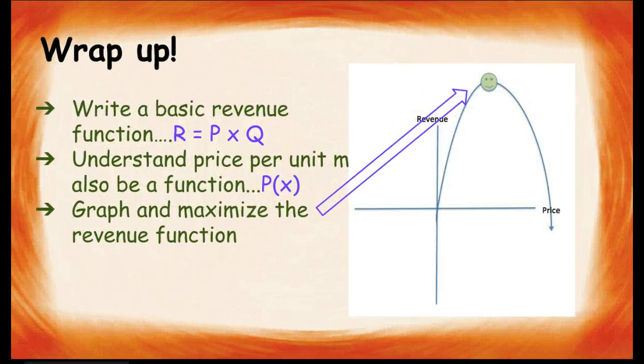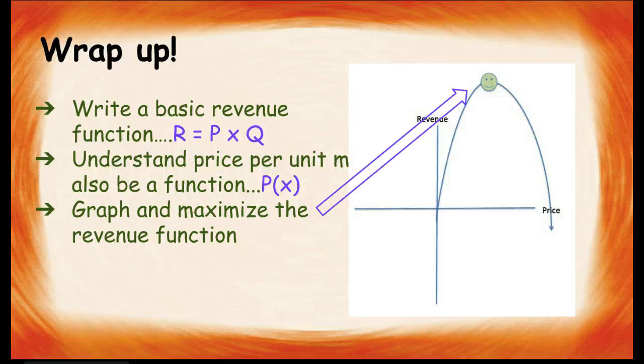Hopefully that was helpful, and that you remember how to find the vertex of a quadratic. So, remember that the a is the coefficient of the x squared term, and the b is always the coefficient of the x term. So, let's wrap up.